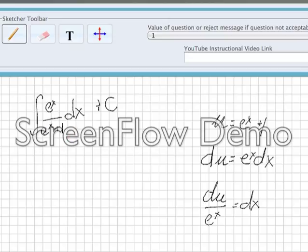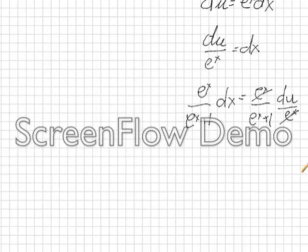And then I can say that my original function and my original differential, e to the x over e to the x plus 1 dx, is equal to substituting my new value for dx in, and that becomes e to the x over e to the x plus 1 times du over e to the x. These will cancel and that becomes du over e to the x plus 1. Fortunately, we defined u as e to the x plus 1, so this is all equal to 1 over u du.